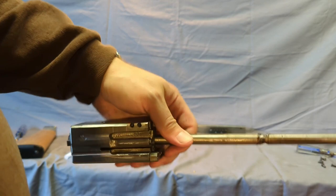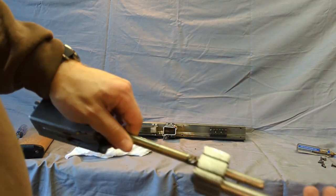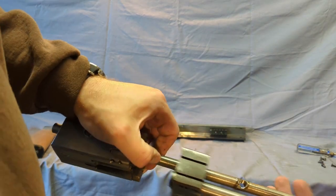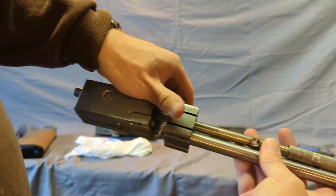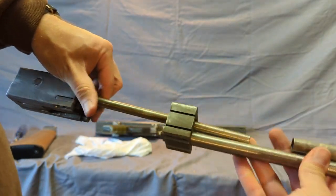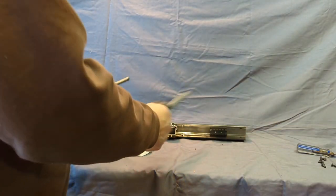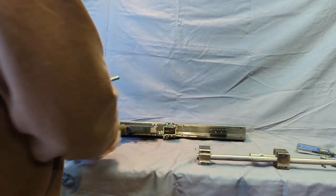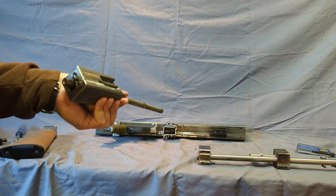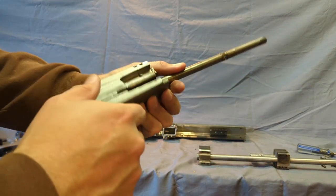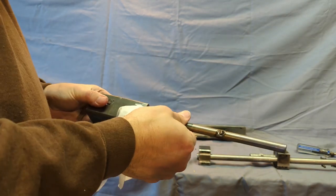And this action bar that I talked about works the action. It slides in here and rides in that hole. You can see how that works. The bolt comes out the back, the barrel comes out the front. The reason being is there's an ejector in there that will hit this bolt.